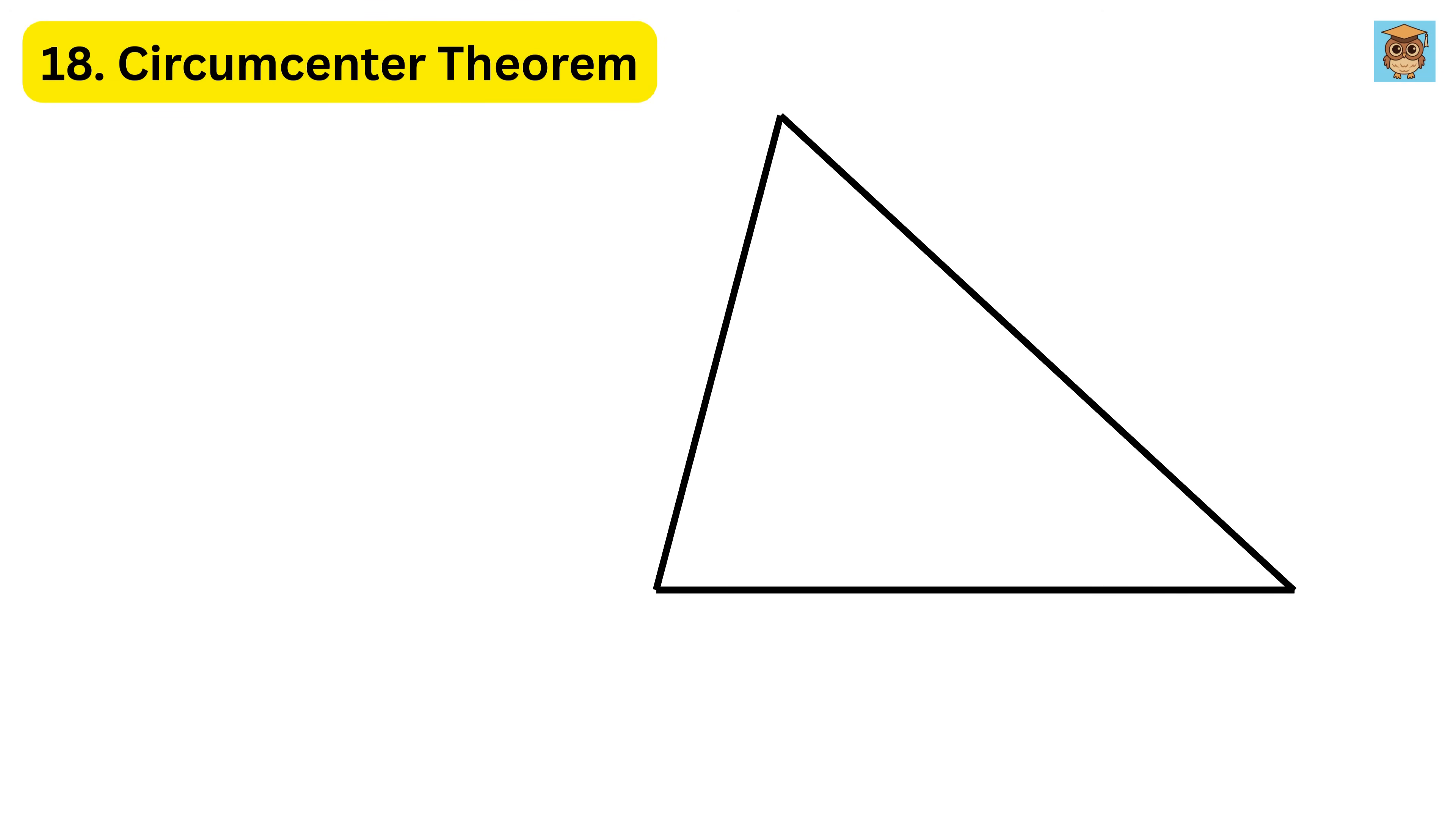18. Circumcenter theorem. Take any triangle. Now draw a line from the midpoint of this side of the triangle such that it is perpendicular to this side. So we can call this line as perpendicular bisector of this side of the triangle. Now do the same for this side and then this side of the triangle. All three lines will meet at a single point, which we call as the circumcenter of this triangle.